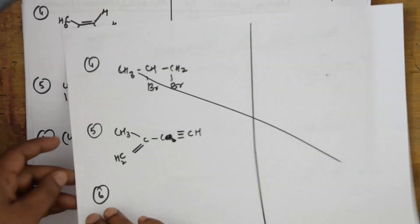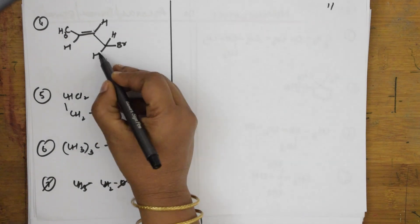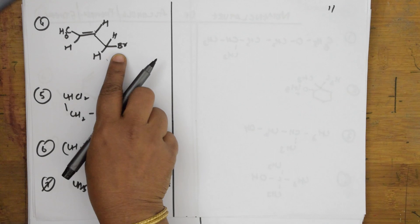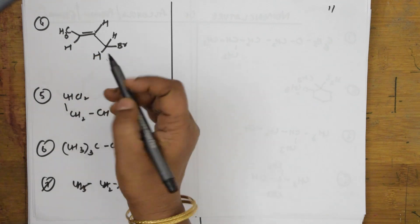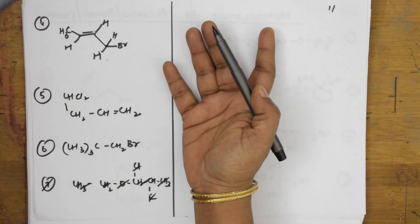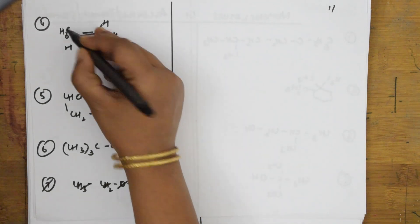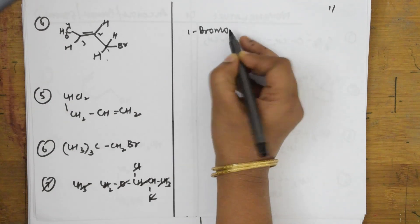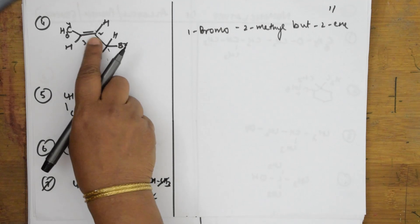Trichlorobutane — done. Now let's do some more examples. Here you have a substituent bromine, and as stated, it should be taken as a substituent. Be careful: you have to find the longest parent chain. Counting one, two, three, four — four carbons — and bromine is present at the first carbon.